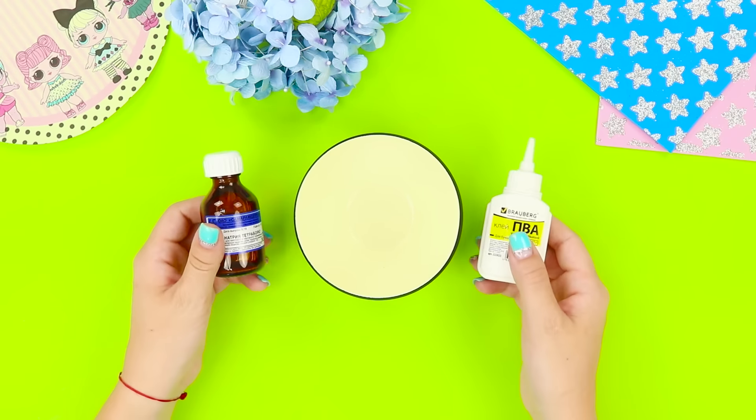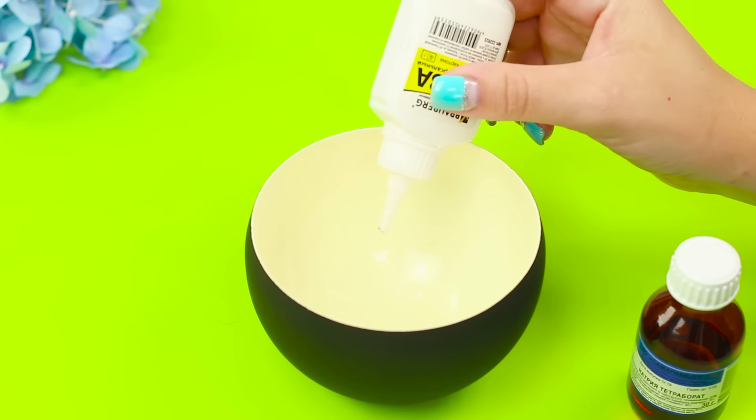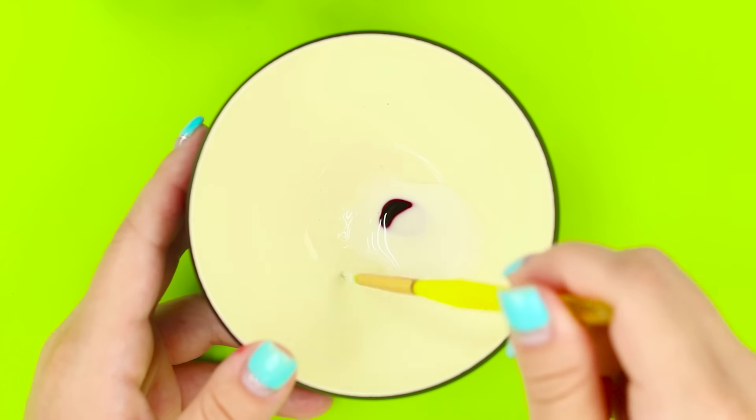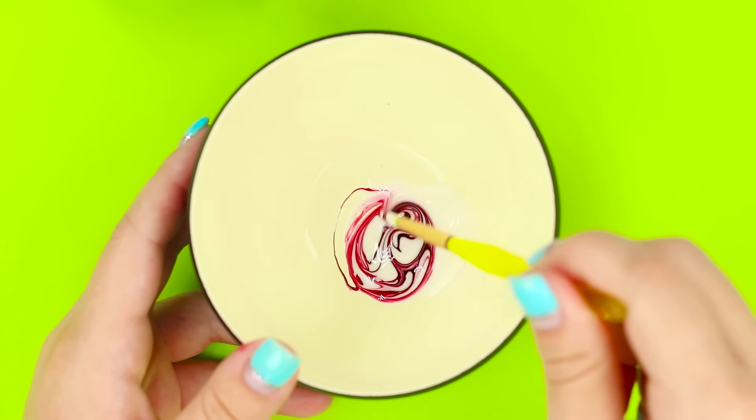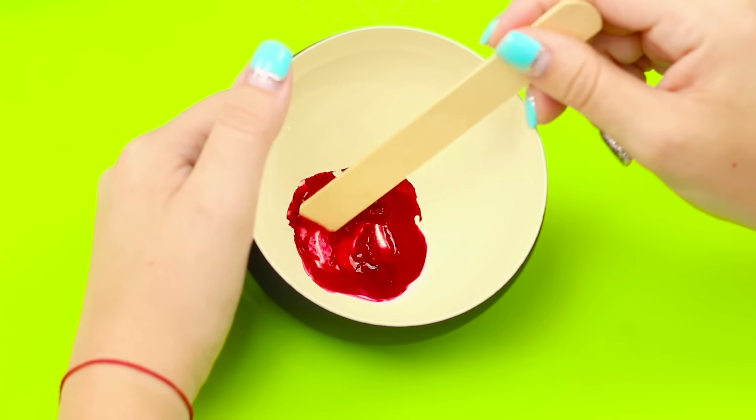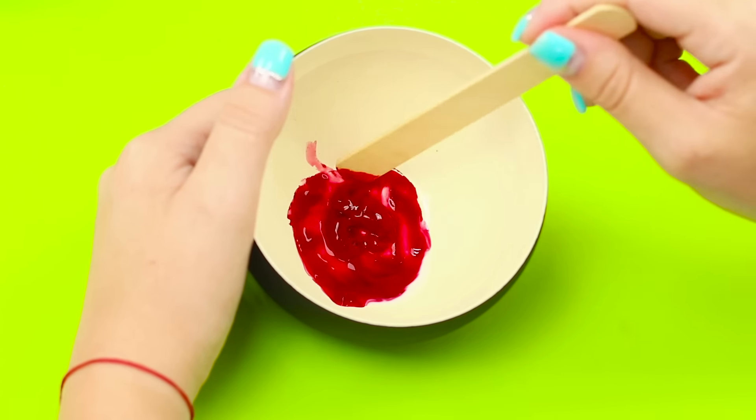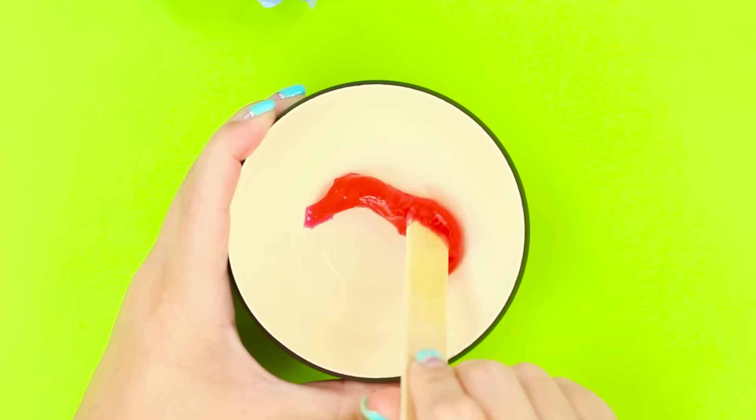And now take a bowl, Elmer's glue, and borax. Pour a few drops of glue into the bowl. Add coloring. Stir the mix with a brush to get a uniform color. Add a few drops of borax. Stir well with a wooden stick. Keep stirring until the mixture thickens.